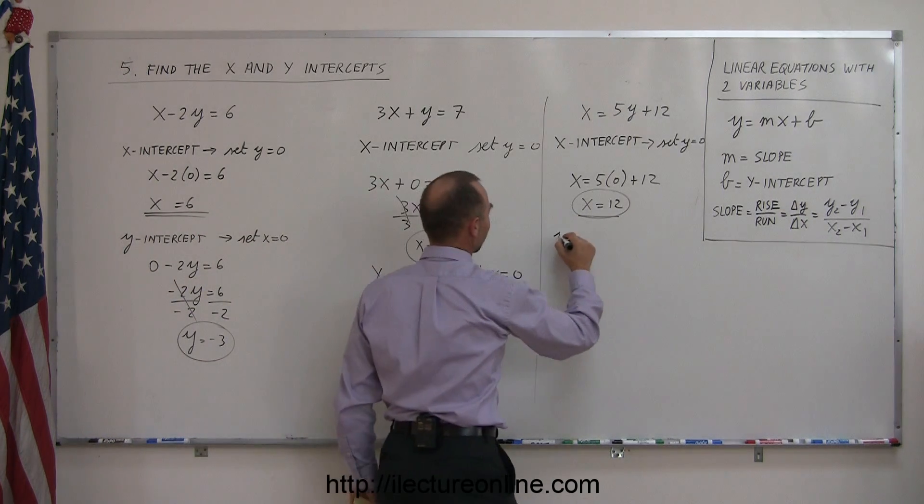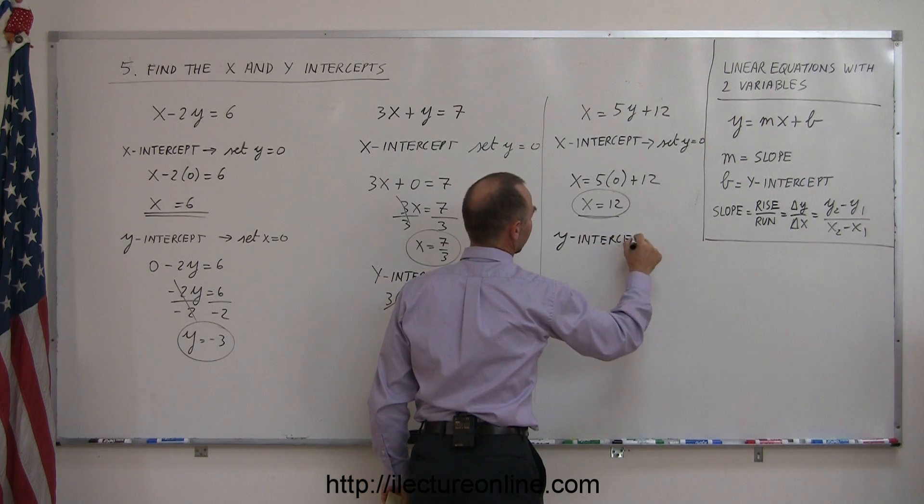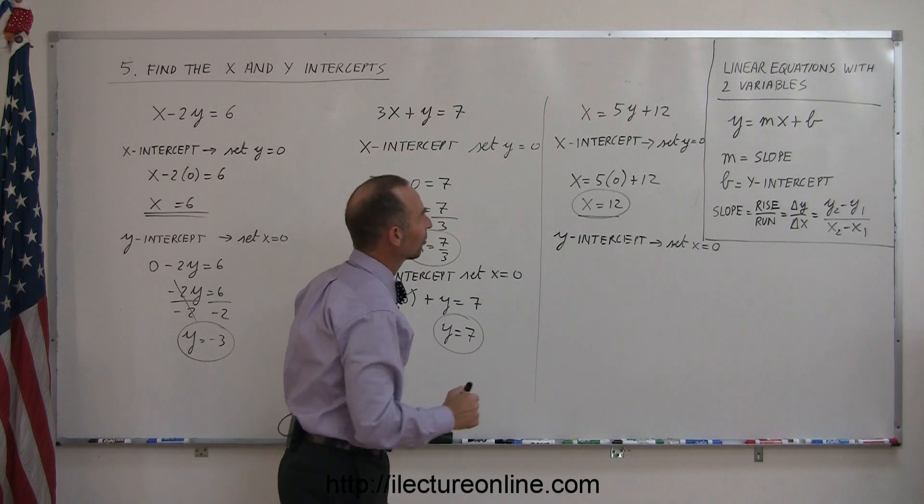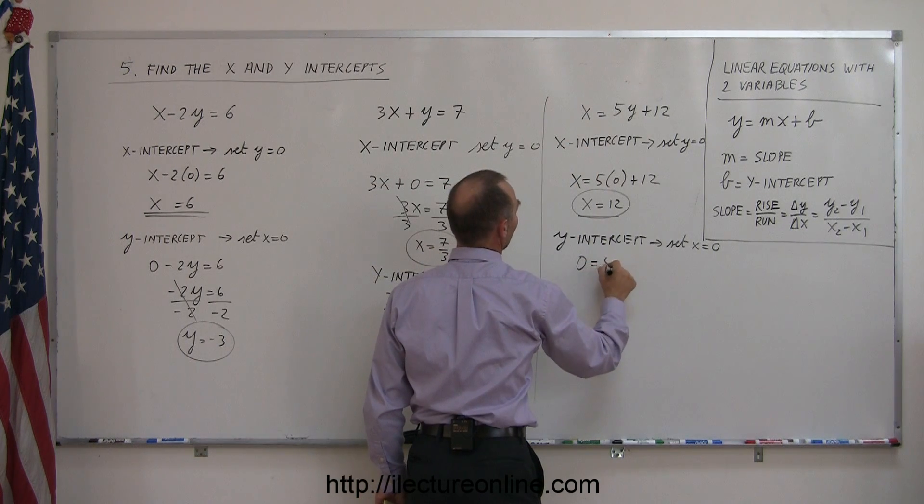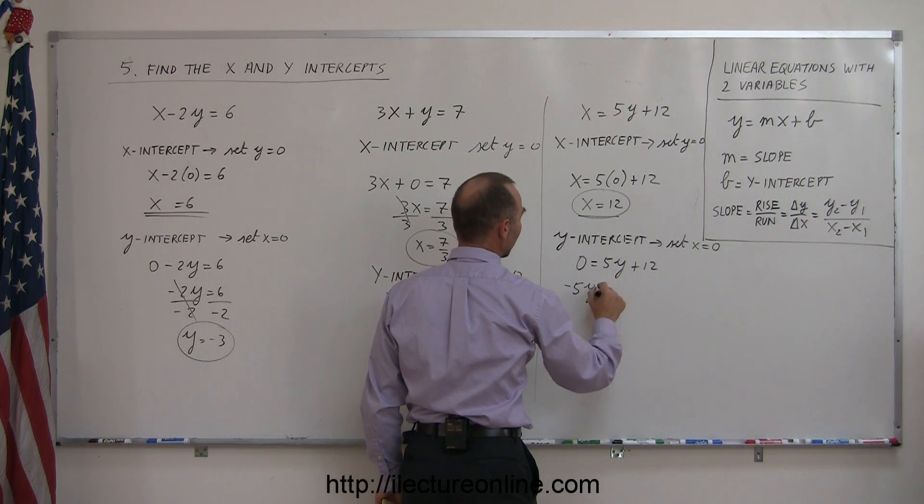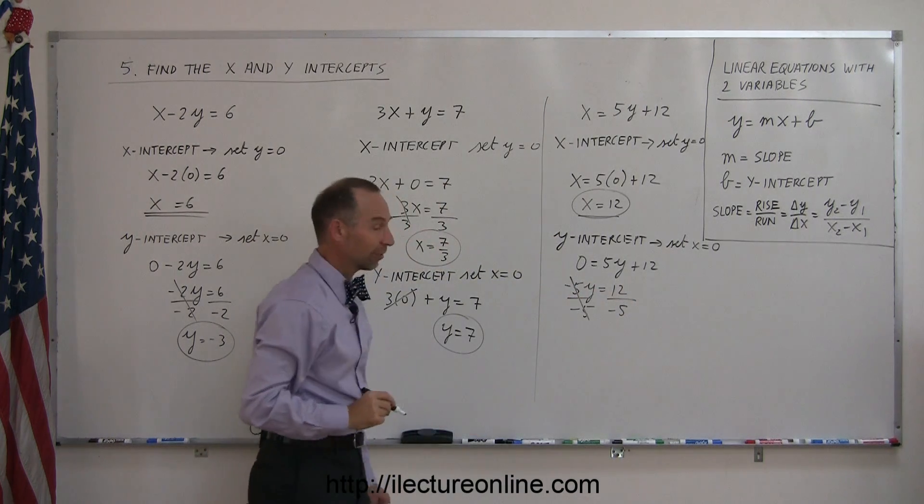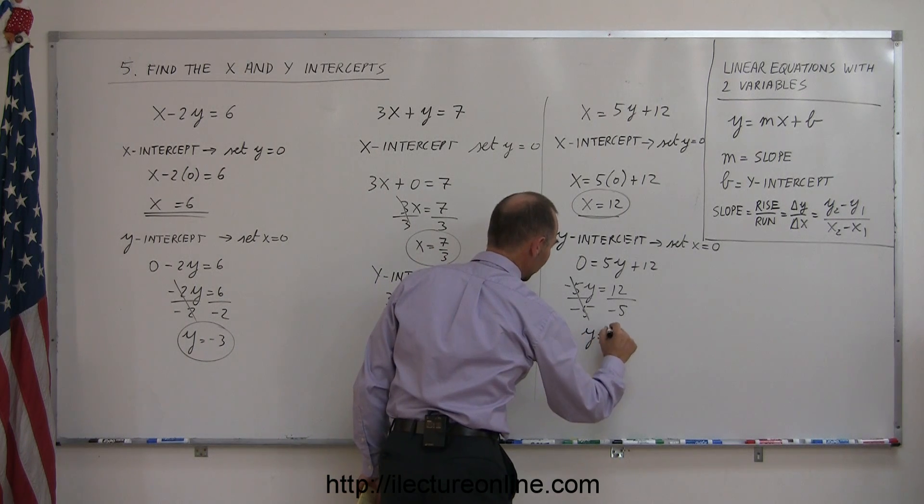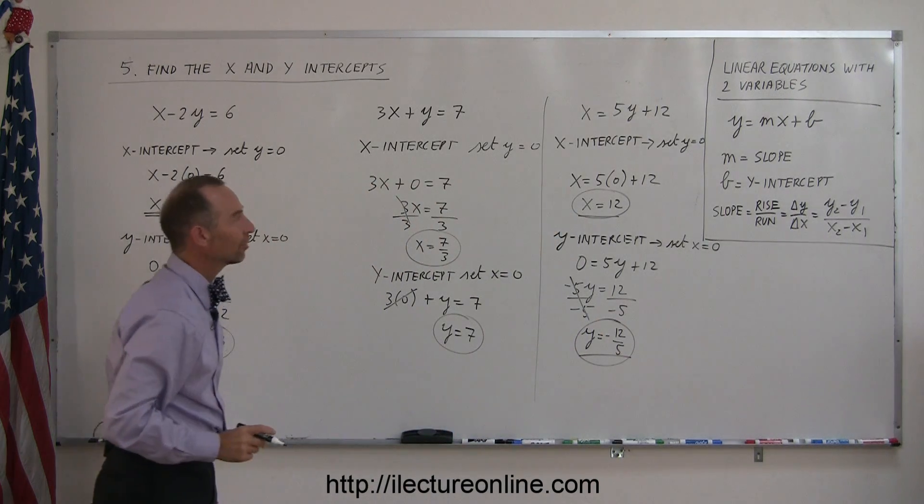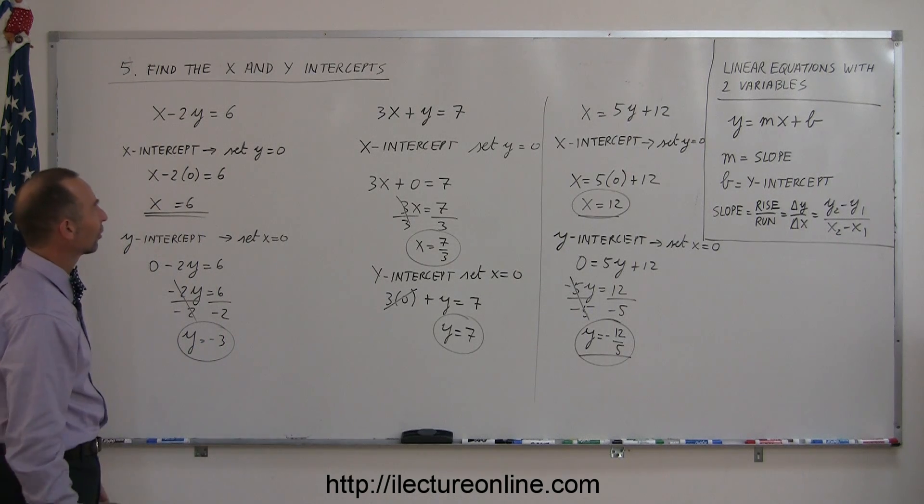And now to find the y-intercept. We're going to set x equal to zero. Take the original equation. Here we get 0 equals 5y plus 12. Now, we move the 5y across. We get minus 5y equals 12. Divide both sides by the numerical coefficient of the y. That cancels out, and now we have y equals negative 12 over 5. And there's the y-intercept. You can see that these are fairly simple problems if you just follow this technique. Hope you have fun with these. Go try some on your homework.